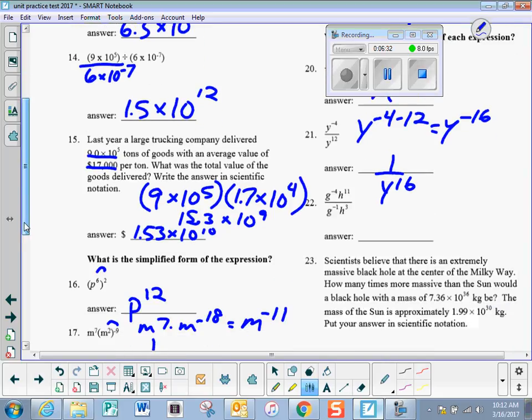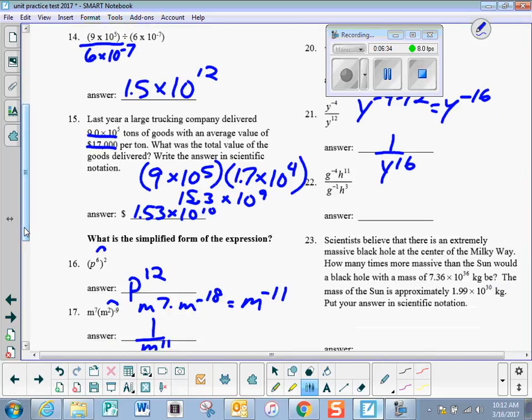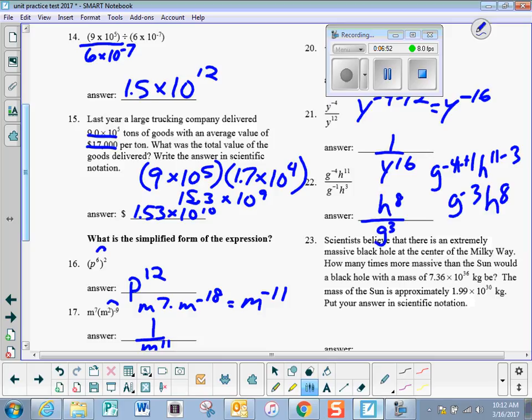Number 22, when I divide things with the same base, I subtract exponents. So g to the negative 4 minus the negative 1, h to the 11 minus 3. I get g to the negative 3rd, h to the 8th. I need to make that negative exponent on g positive by putting it under 1. The 8th stays put because it's already positive.